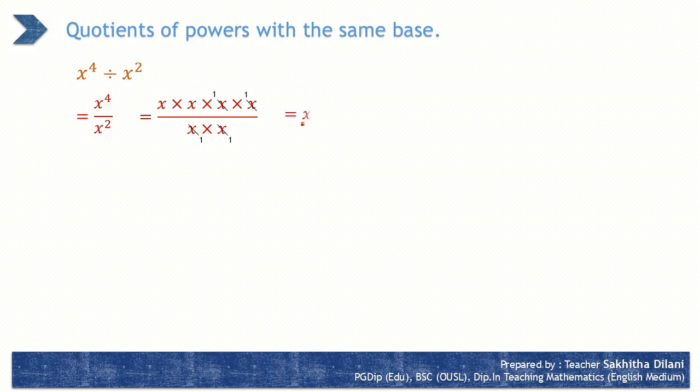Consider the division of the powers: x to the power 4 by x to the power 2. It can be expressed as x to the power 4 over x to the power 2. Now write the numerator and the denominator by expanding and simplify. The numerator can be written as x into x into x into x, and the denominator as x into x. You can see that x is cancelled, and x into x is left. It can be written as a power, that is x to the power 2. Thus, x to the power 4 over x to the power 2 equals x to the power 2.